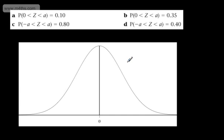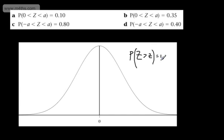The percentage points table gives us the probability of Z, which is our continuous random variable, being greater than some observed value of Z, and that's given as P. What we're going to do is use that and find the value of A from those.